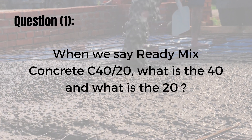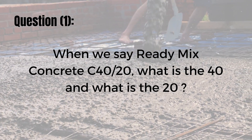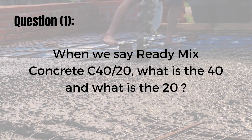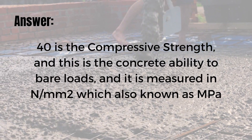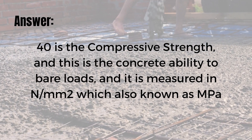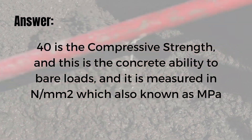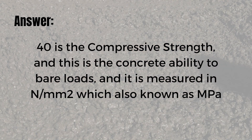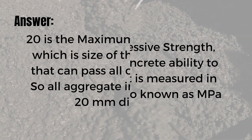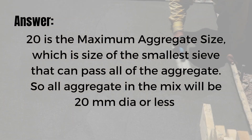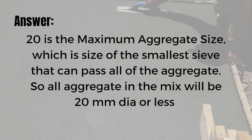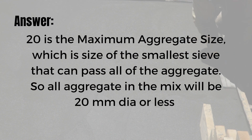The first question: when we say ready mix concrete C4020, what is the 40 and what is the 20? The answer is 40 is the compressive strength — the concrete's ability to bear loads — measured in newton per millimeter square, also known as megapascal. The 20 is the maximum aggregate size, meaning the size of the smallest sieve that all aggregate can pass through. So all aggregate in the mix will be 20mm diameter or less.